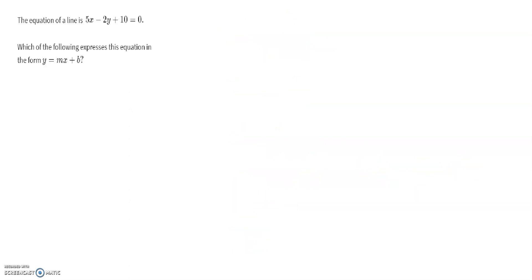The third question is: the equation of a line is 5x minus 2y plus 10 equals 0, which is the standard form. Which of the following expresses this equation in the form y equals mx plus b? I will show all the steps. We start with the given equation and rearrange it into slope-intercept form.